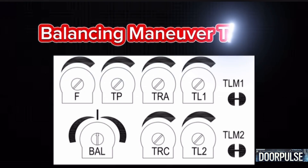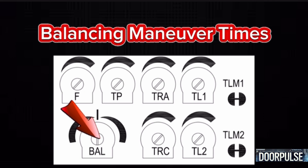2. Balancing maneuver times (BAL) — differentiates the time required for opening and closing maneuvers. Useful when the motor has different speeds in two directions or when the gate leaves are offset during opening and closing. Adjust clockwise to increase opening time and ensure deceleration starts at the correct position, e.g., 50 cm before the mechanical stop. Adjust counterclockwise to balance and extend closing times. When properly balanced, opening and closing maneuvers will take equal time.